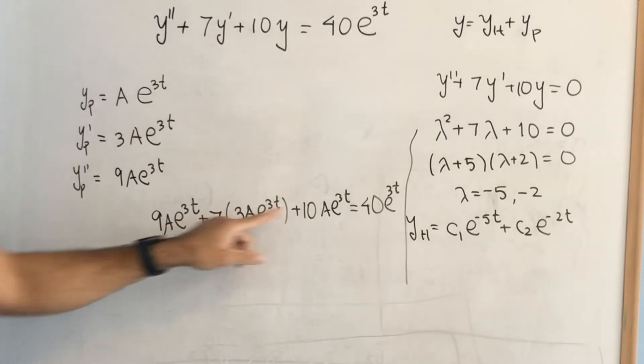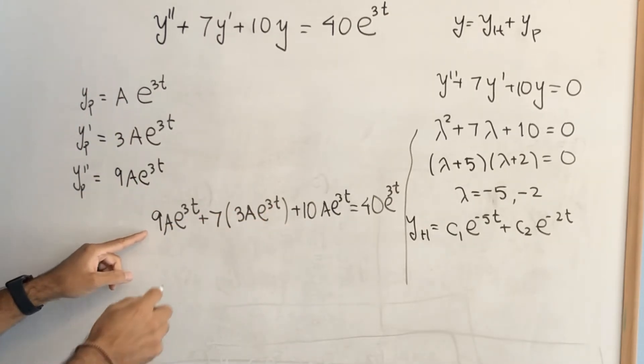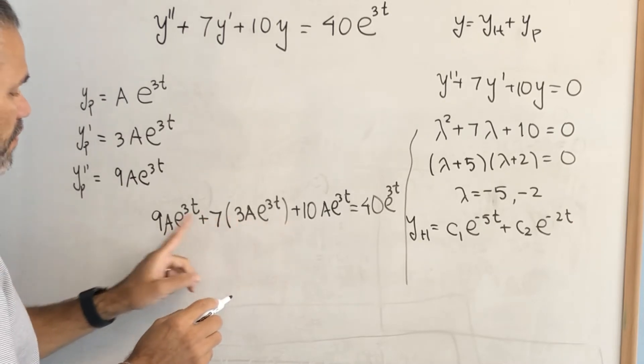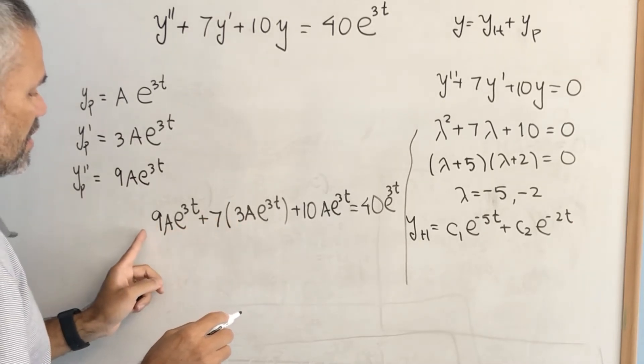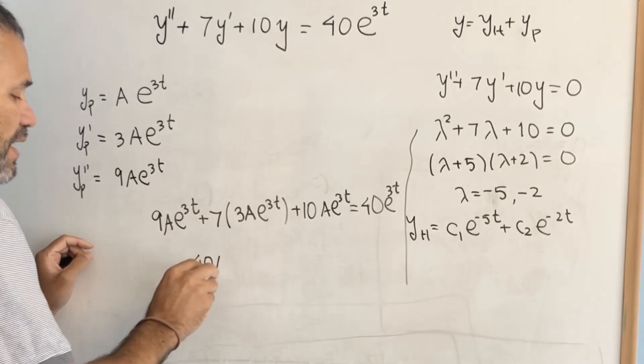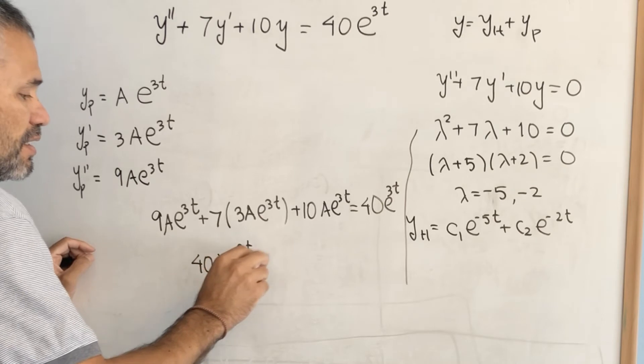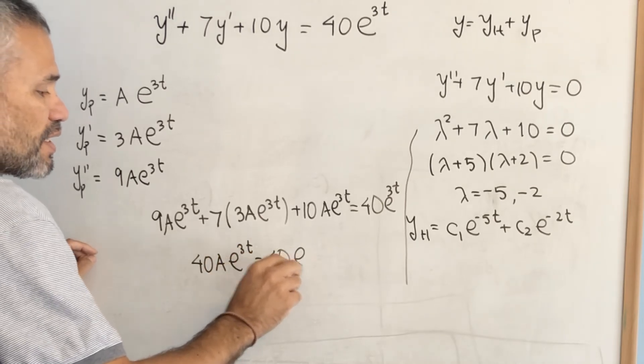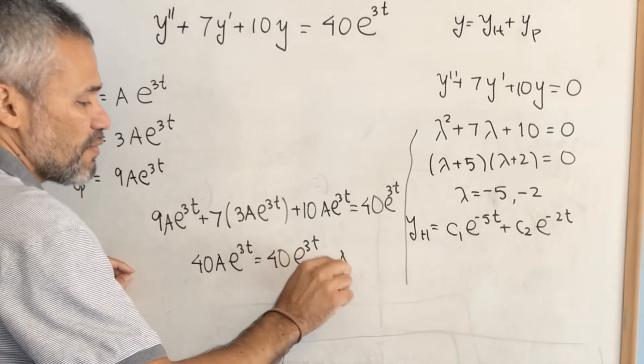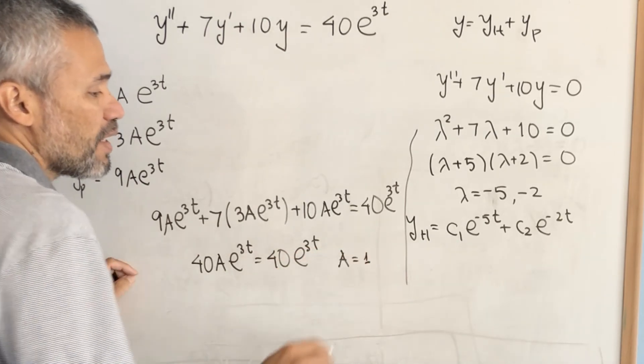Then, by doing the arithmetic here, we get this is 9 plus 21 is 30 plus 10 is 40. Then, we get 40a e to the 3t equal to 40e to the 3t. And we can make these two functions to be the same if we pick a equal 1.